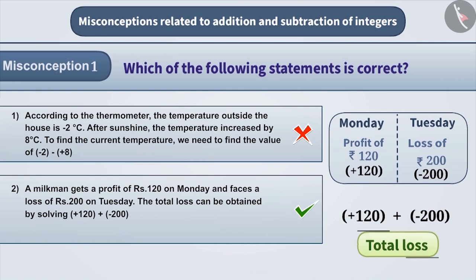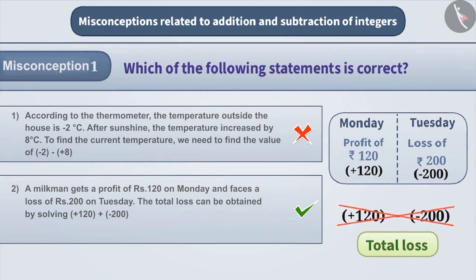To find the total loss, sometimes it is understood that loss has to be subtracted from the profit. That is, plus 120 minus minus 200. This is an incorrect understanding.